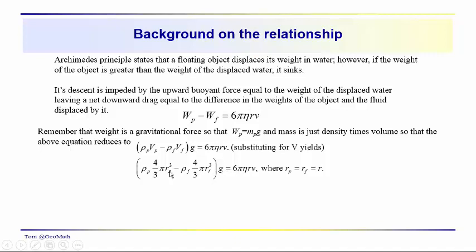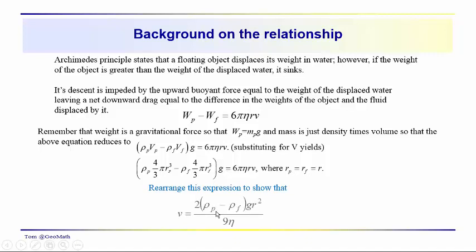The particle radius, the radius of the spherical volume of water displaced by the particle, are all equal: r sub p equals r sub f equals r. Rearranging, you can derive Stokes' law, showing that the velocity is equal to two times the difference in densities times the acceleration due to gravity times the particle radius squared, all divided by nine times the viscosity.